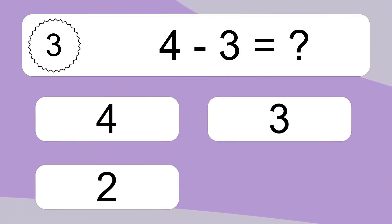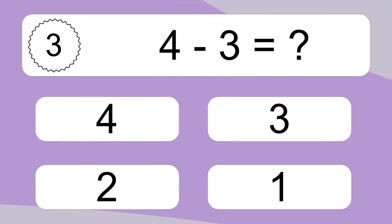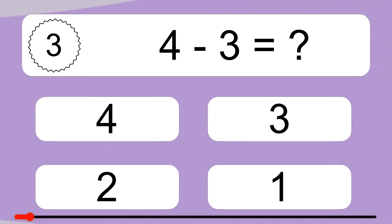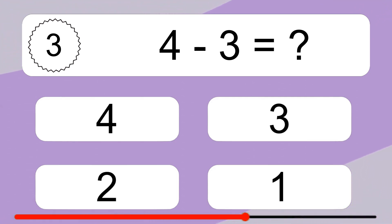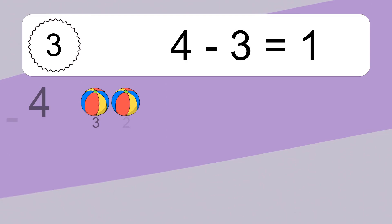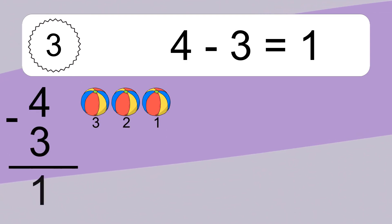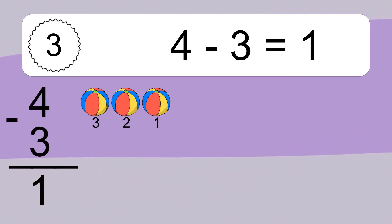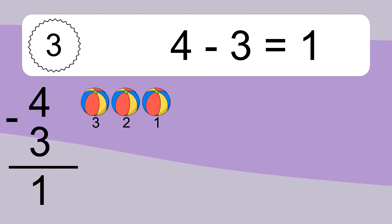4 minus 3 equals what? 4 minus 3 equals 1. Let's count it: 3, 2, 1.